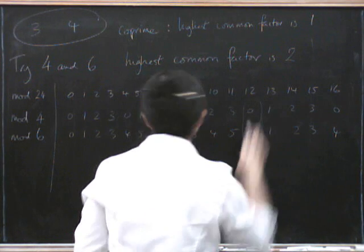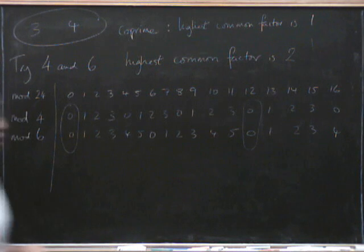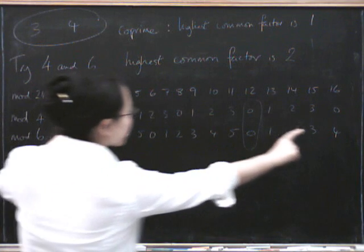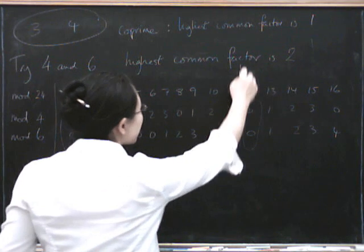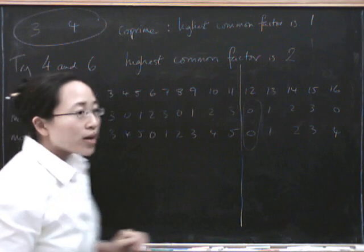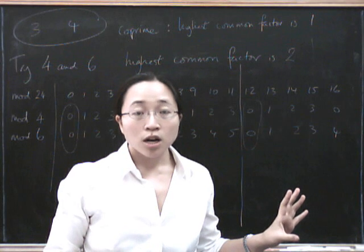Because I've got a 0, 0 here, which was the same as the 0, 0 here. And as soon as I hit that 0, 0 again, the pattern is going to be exactly the same. So in fact, I only needed to go up to 12 because they only had to go up to 12 before the pattern would start repeating itself. And why is that true?